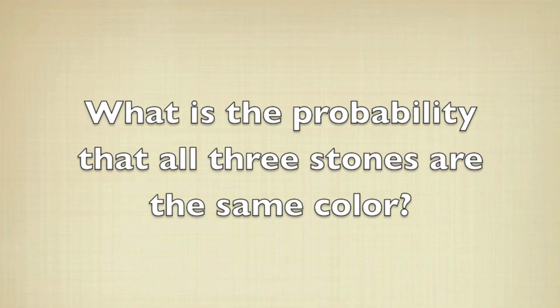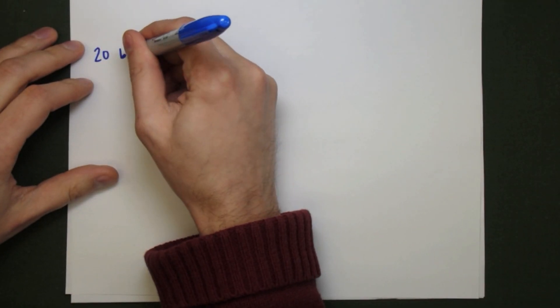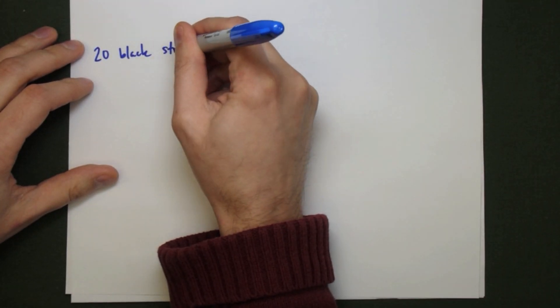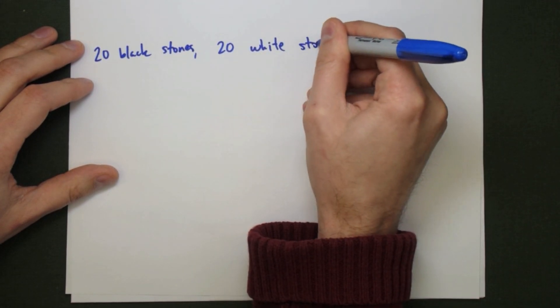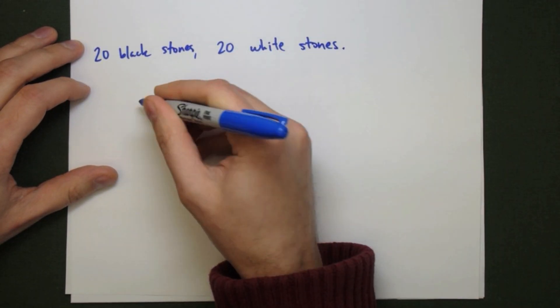What's the probability that all three stones that we pull are the same color? We need to approach this problem the same way we approached the previous problem. The total number of ways we can pull out three stones will be the denominator and the total number of ways we can satisfy the event will be the numerator. We have 20 black stones and 20 white stones.